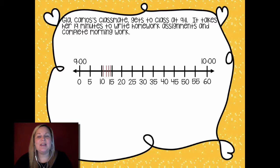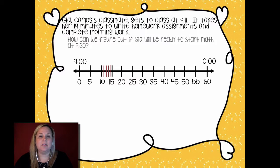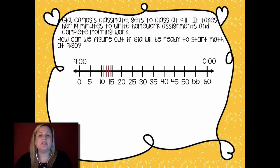The next part of our problem says Gia, who's Carlos's classmate, gets to class at 9:11. It takes her 19 minutes to write her homework assignments and complete her morning work. We need to figure out if Gia will have enough time with that 19 minutes to be ready to start her math at 9:30. We're going to still make those same jumps on the number line. We're going to be trying to go from the 9:11 because that's when she gets there to get to that 9:30. So there's that 9:11. We're going to make those jumps. She takes 19 minutes.